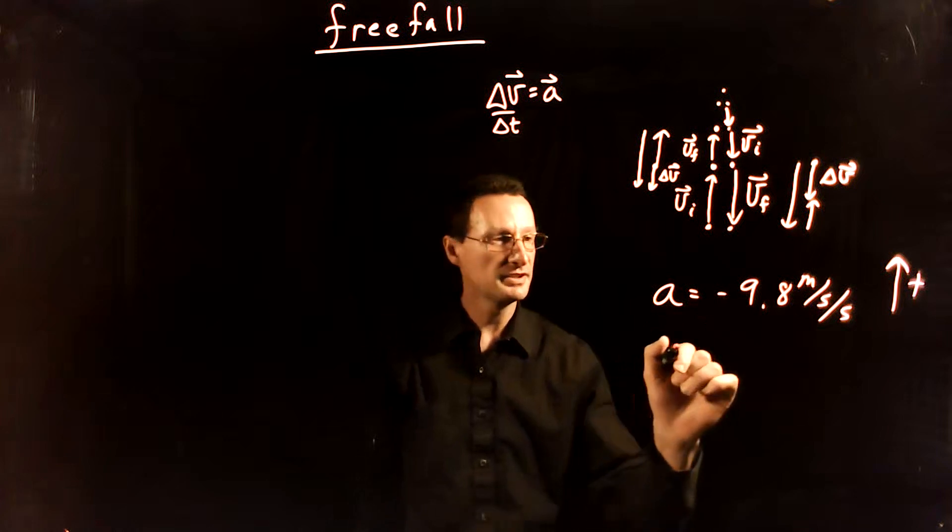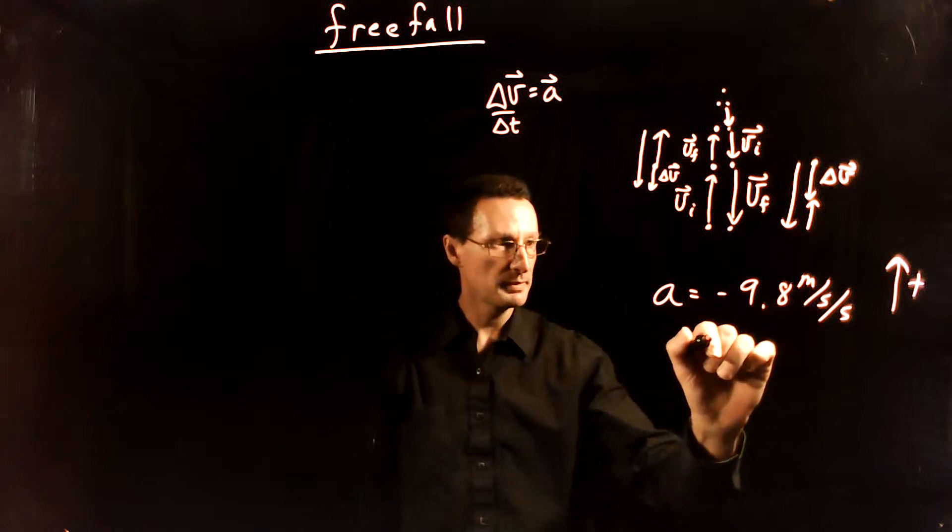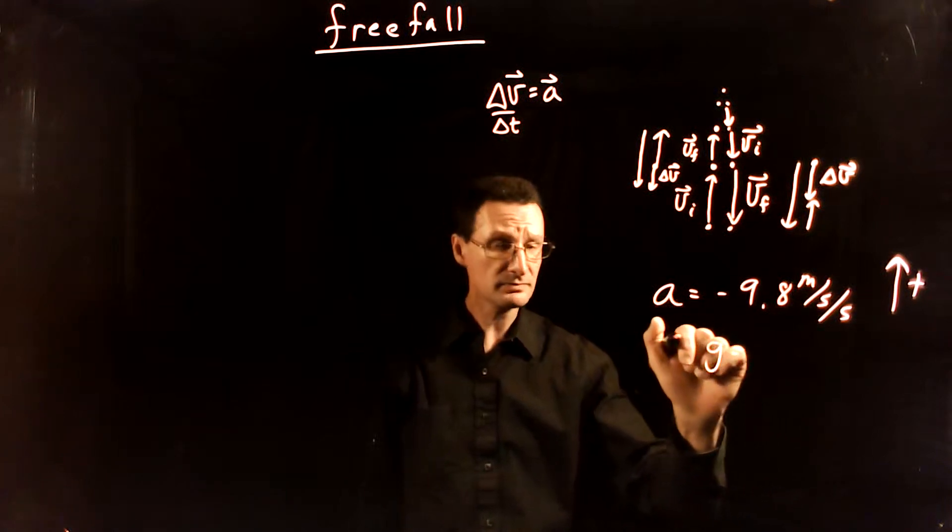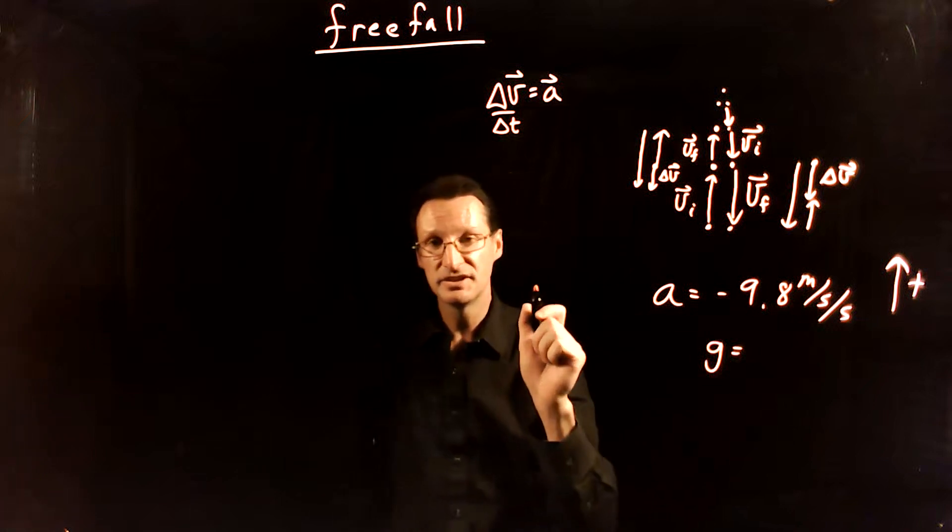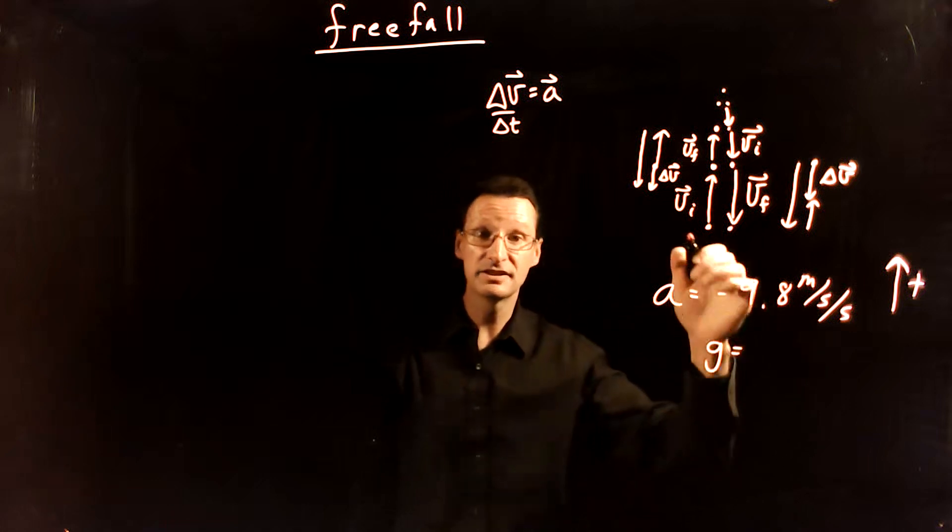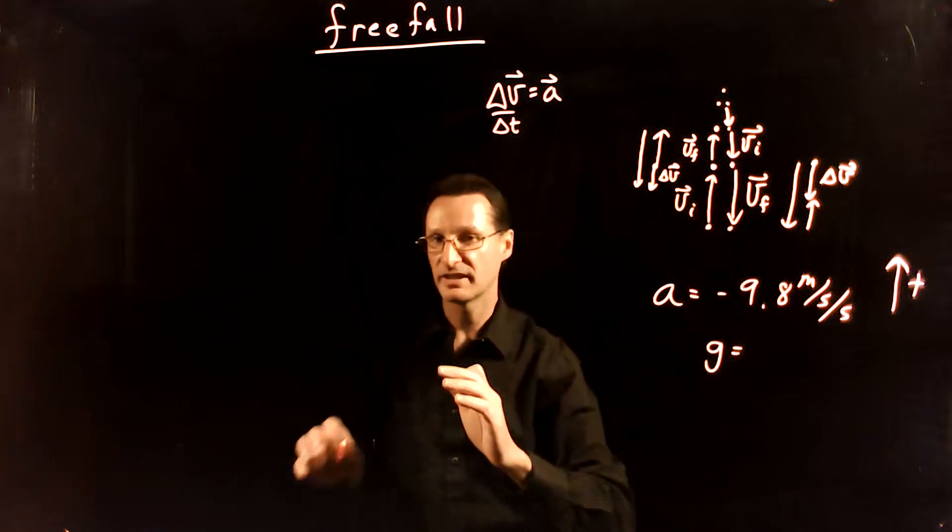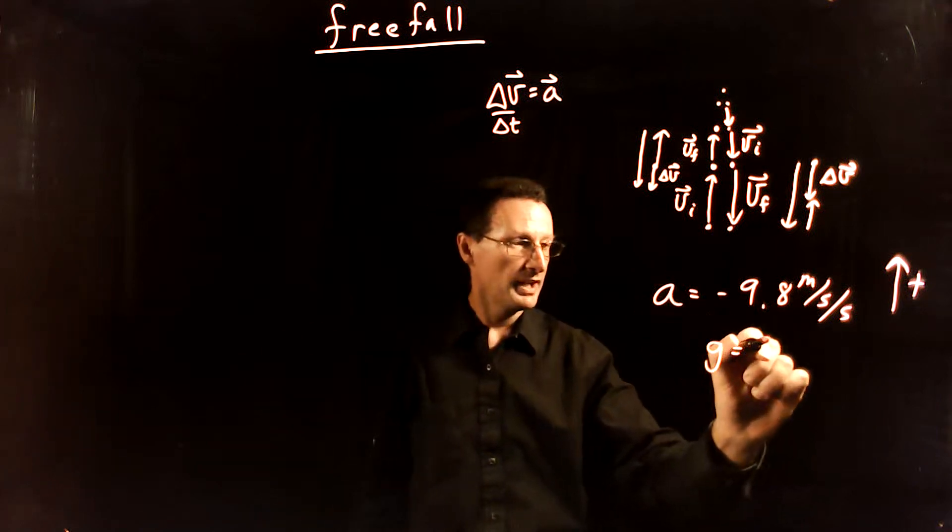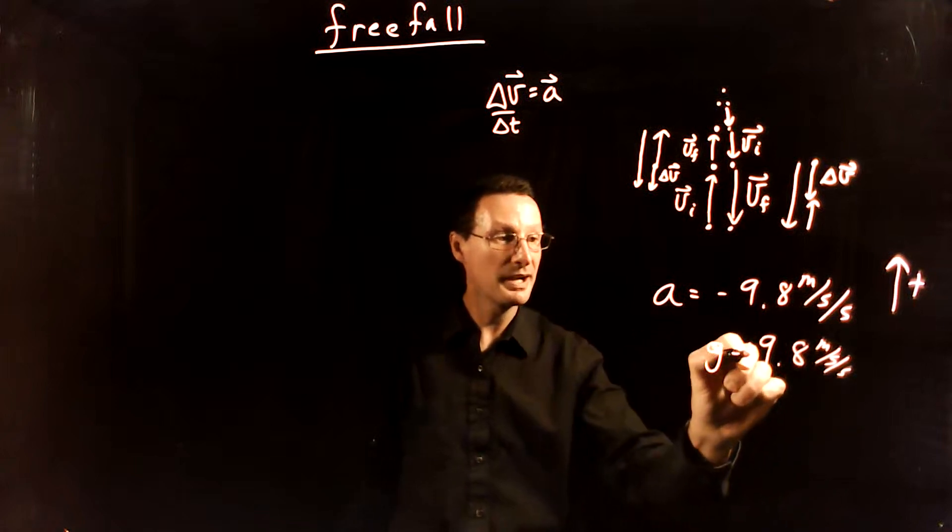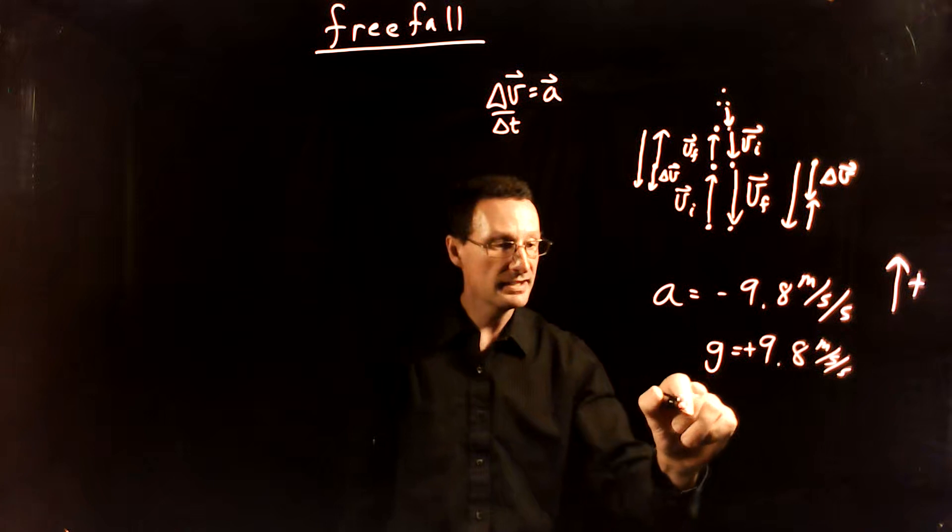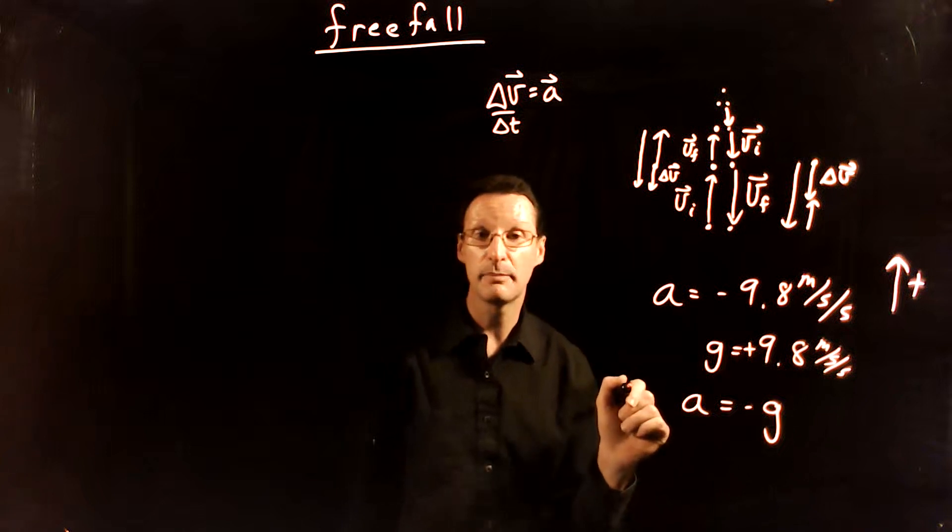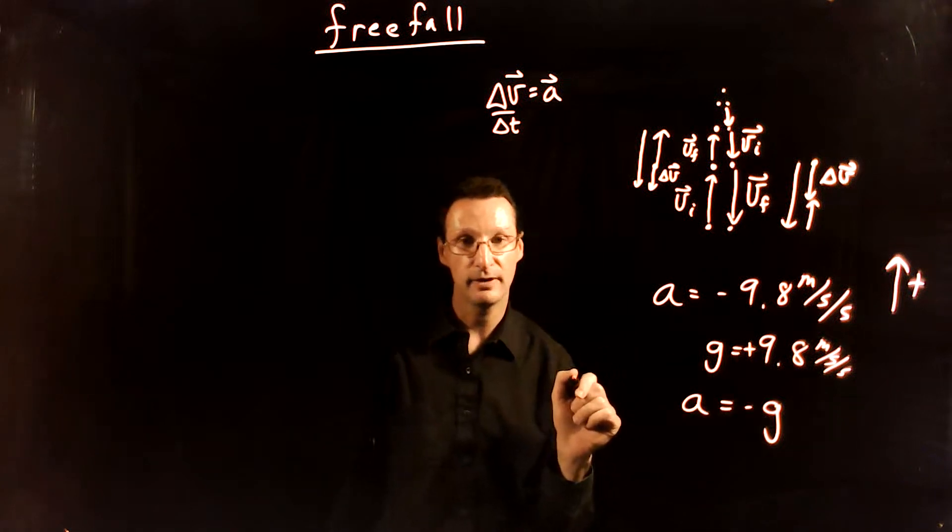Because this is such a commonly used constant, 9.8 meters per second per second, we give it its own variable name g. G does not stand for gravity. Do not use g, do not say g is gravity, because that is not true. G is an acceleration under certain circumstances. Gravity is a force. There are different things. However, we say g is 9.8 meters per second per second, and notice that g is positive. In this situation we say that acceleration is negative g. So the g itself is a positive number, but then we add a negative by hand out front.